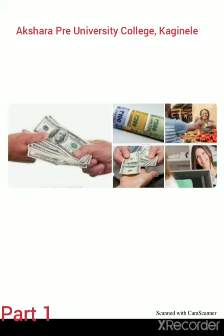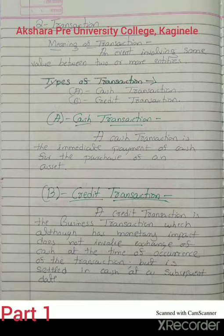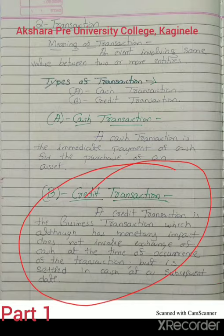If between the buyer and seller the cash is settled immediately, that kind of transaction is called a cash transaction. The second type is a credit transaction — it is the opposite. Under a credit transaction, immediate payment of cash is not possible. A credit transaction is a business transaction which has monetary impact but does not involve exchange of cash at the time it occurs. It is settled in cash at a subsequent date. That kind of transaction is called a credit transaction.